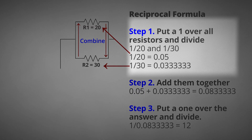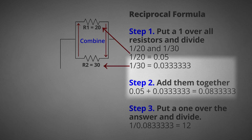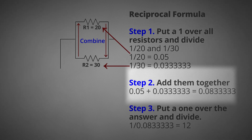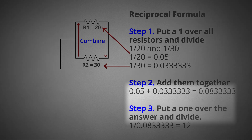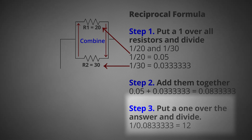Step 1: put a 1 over all resistors and divide. 1 divided by 20 equals 0.05; 1 divided by 30 equals 0.03333333. Step 2: add them together — 0.05 plus 0.03333333 equals 0.0833333. Step 3: put a 1 over the answer and divide — 1 divided by 0.083333333 equals 12.